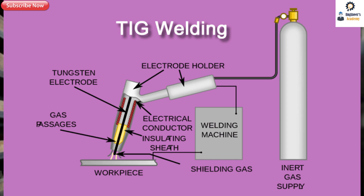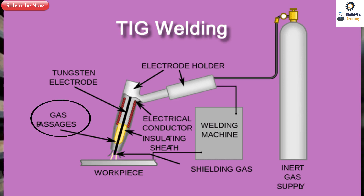Gas tungsten arc welding is well known as TIG welding. In this process, a non-consumable tungsten electrode is used to weld the material. The electrode is shielded with gases like helium or argon to protect the weld area from oxidation. It is used to weld thin sheets.